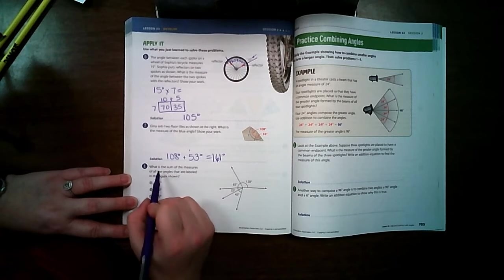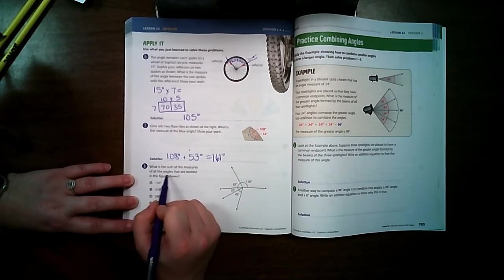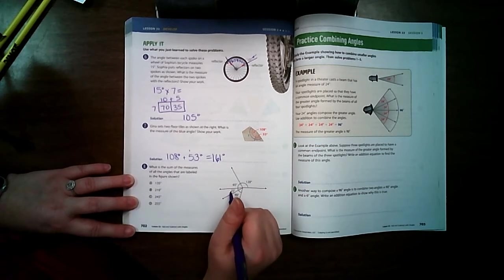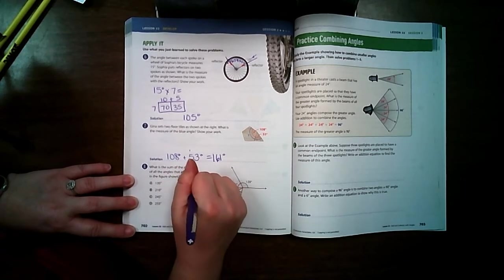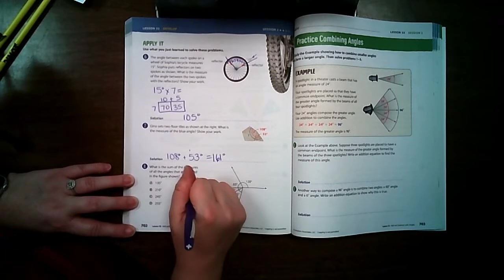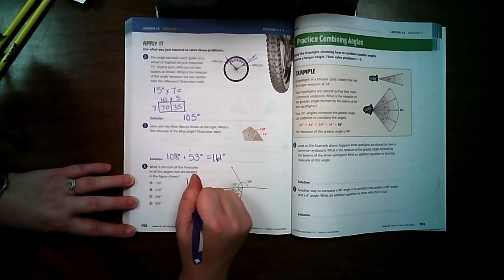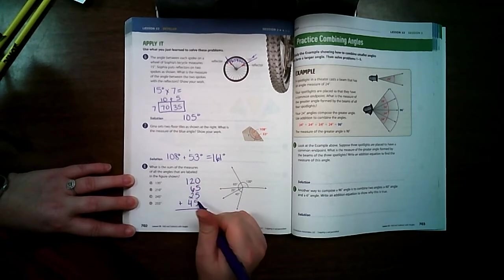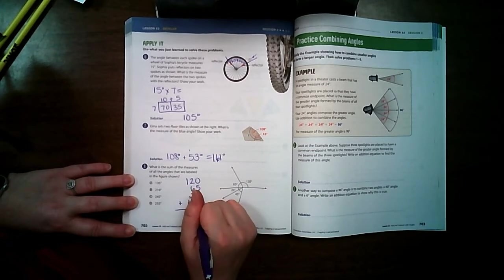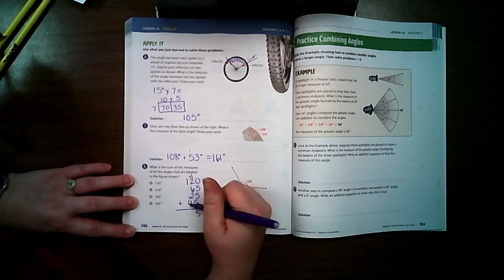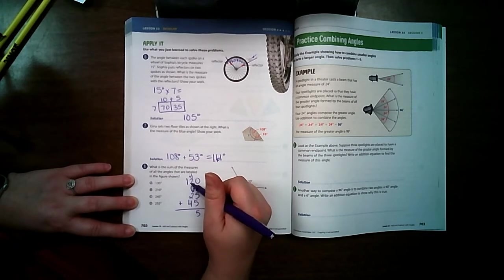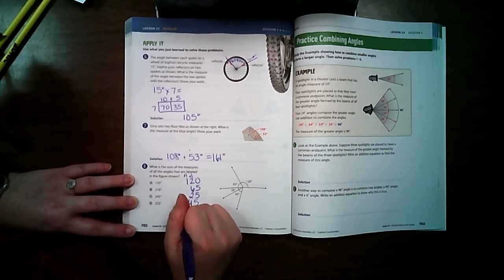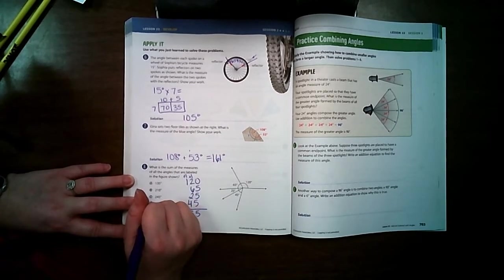Number 8. What is the sum of the measures of all the angles that are labeled in the picture shown? So we have to add all of these together: 120, 65, 25, and 45. 5, 10, 15, carry my 1. 4, 5, 6, plus 6 is 12, 13, 14, 15, carry my 1. 255 degrees, and that's an answer.